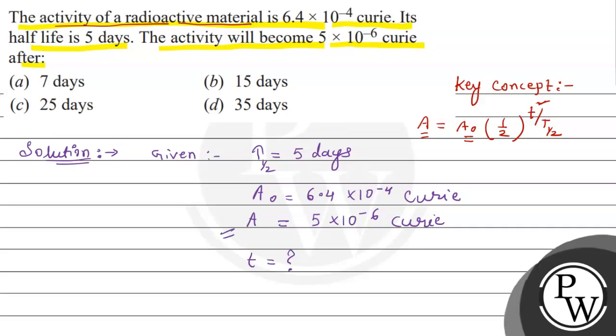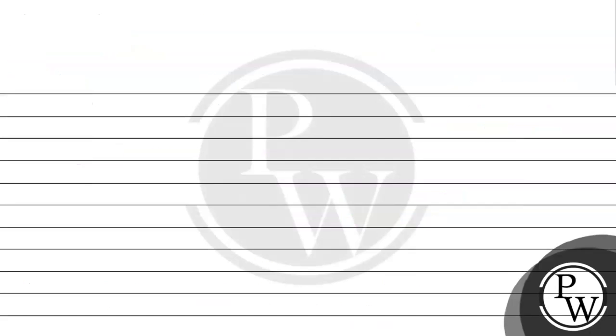We have to calculate t by using this expression. Therefore substituting all given values in the expression: A is equals to A naught 1 by 2 raised to power t upon T 1 by 2. A is 5 into 10 to the power minus 6, A naught is 6.4 into 10 to the power minus 4, and 1 by 2. Small t we need to find out and capital T is given as 5.